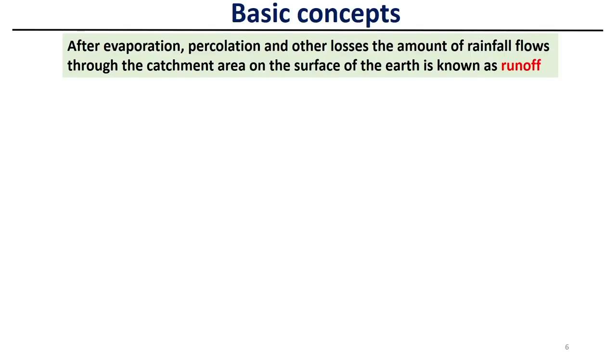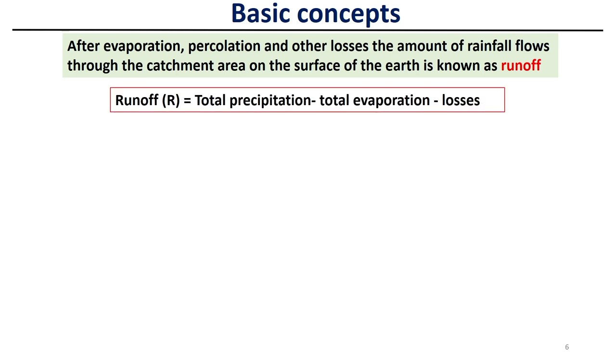Both storage and run-of-river configurations have advantages and disadvantages, but for small hydro power plants we mostly harvest energy using the run-of-river approach. Once we account for evaporation, precipitation, and other losses, the amount of rainfall that flows through the catchment area on the surface of the earth is designated as runoff. Runoff = total precipitation − total evaporation − losses. This is very important to know the potential of the water to run a water turbine for electricity generation.